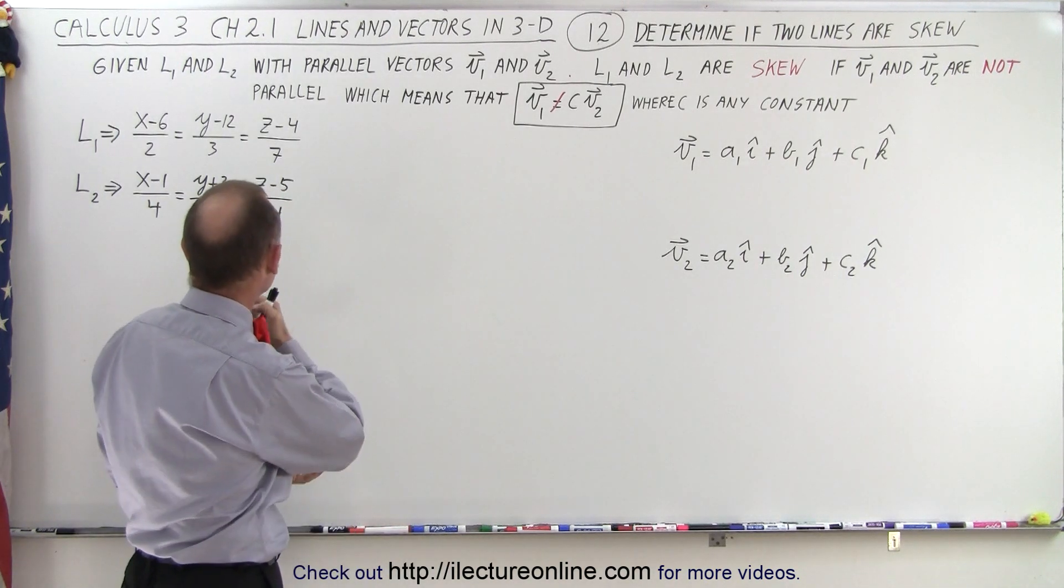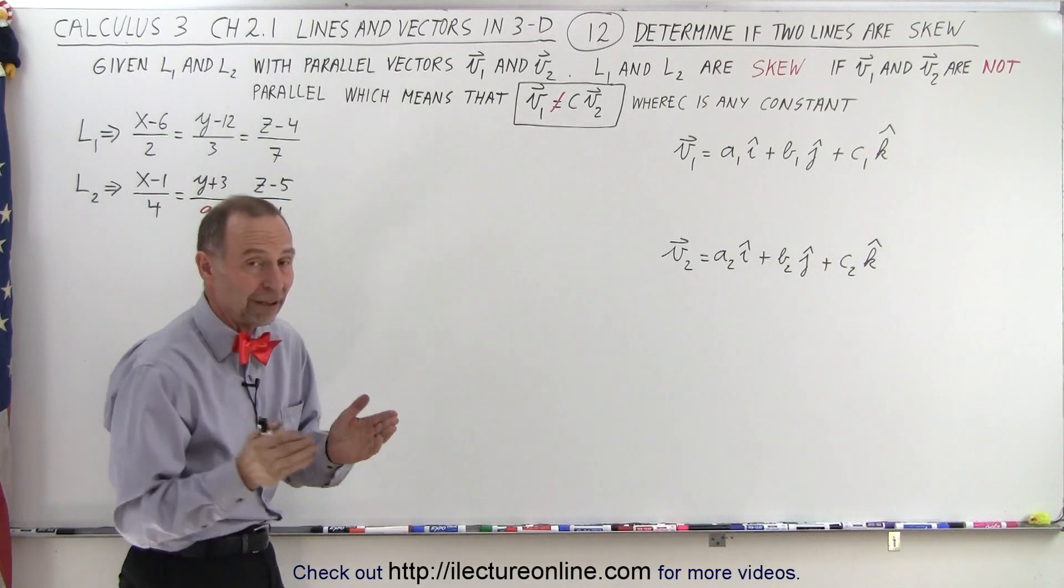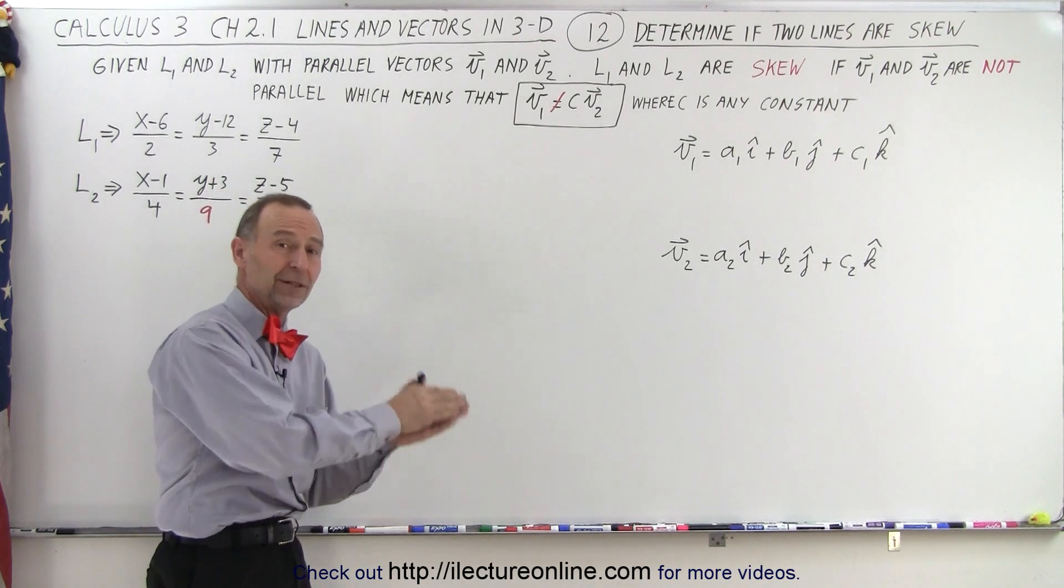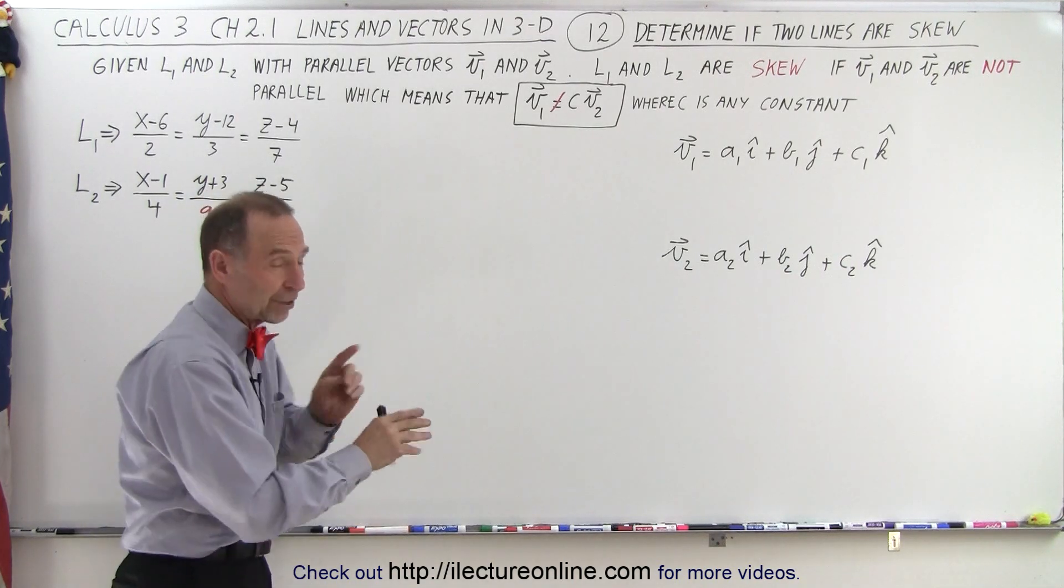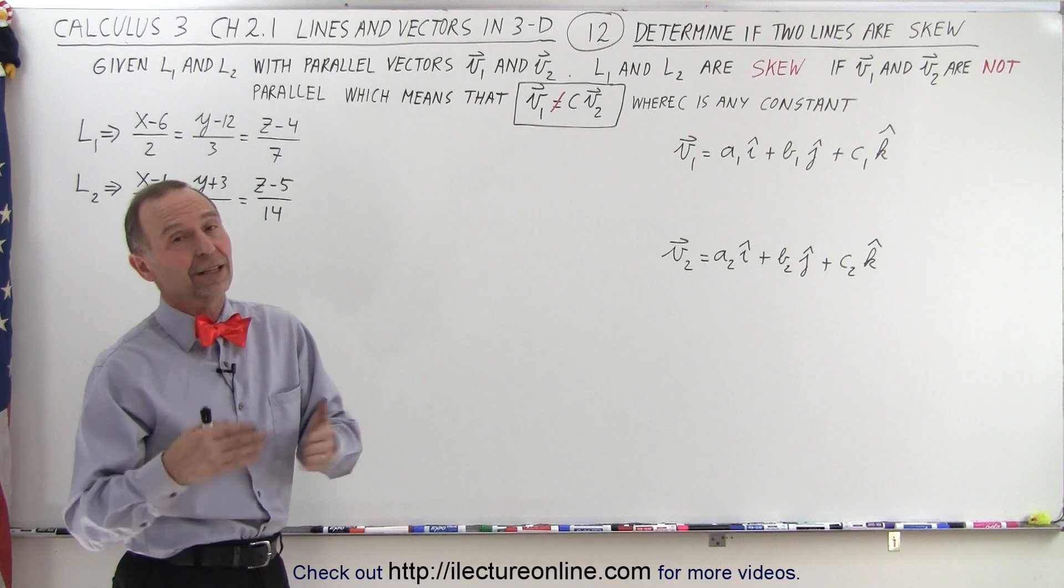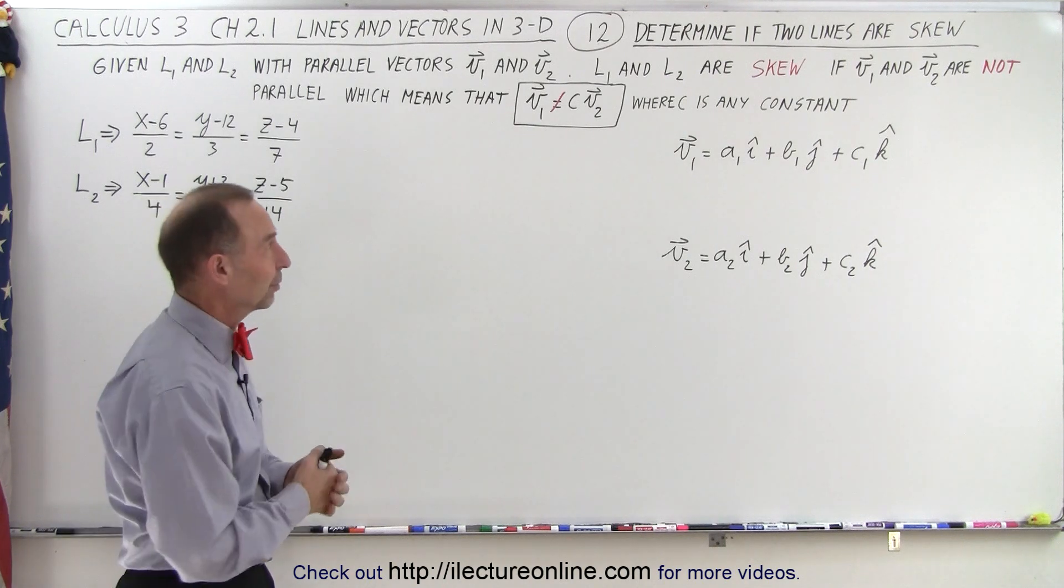And if we have two lines, L1 and L2, and they of course have two parallel vectors, V1 and V2, V1 being parallel to L1 and V2 being parallel to L2, now if those two vectors are not parallel to each other, then of course the lines are not parallel to each other.